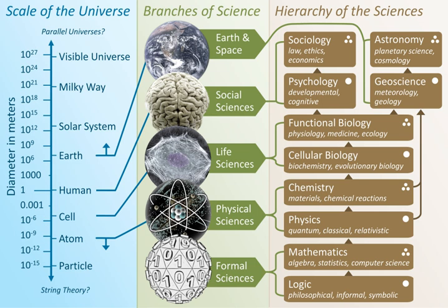Over the last two millennia, physics was a part of natural philosophy along with chemistry, certain branches of mathematics, and biology, but during the scientific revolution in the 16th century, the natural sciences emerged as unique research programs in their own right. Certain research areas are interdisciplinary, such as biophysics and quantum chemistry, which means that the boundaries of physics are not rigidly defined. In the 19th and 20th centuries, physicalism emerged as a major unifying feature of the philosophy of science as physics provides fundamental explanations for every observed natural phenomenon. New ideas in physics often explain the fundamental mechanisms of other sciences, while opening new research areas in mathematics and philosophy.